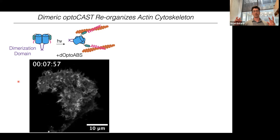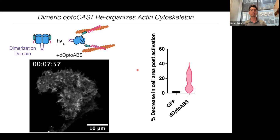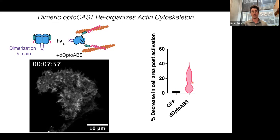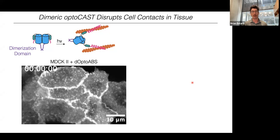In doing so, it also changes the area of the cell. Expressing just GFP and adding 460 nm light shows no real change in cell area, but when we express the dimeric version of the Opto-CAST, we see about a 20% decrease in cell area after 10 minutes. We've also played around with this switch in tissue — in MDCK2 epithelial cells — where adding 460 nm light causes the cells to contract, producing very large deformations in the tissue. The junctions are almost completely disrupted because all cells decreased their area simultaneously.